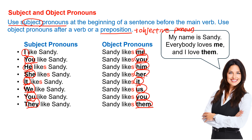I like Sandy. Sandy likes me. Sandy is third person singular, so we need an S. You like Sandy. Sandy likes you. He likes Sandy. Sandy likes him. She likes Sandy. Sandy likes her. It likes Sandy. Sandy likes it. We like Sandy. Sandy likes us. You like Sandy. Sandy likes you. They like Sandy. Sandy likes them.